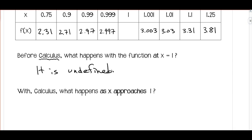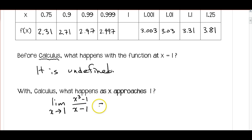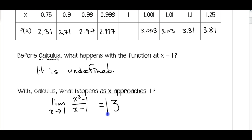This concept is a limit. What is the limit as x approaches 1 for the function (x³ - 1) / (x - 1)? We can see the pattern in the chart — we're getting very, very close to 3. Here we're at 2.997, very close to 3. Here we're at 3.003, again very close to 3.